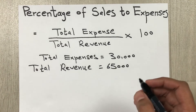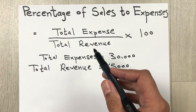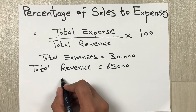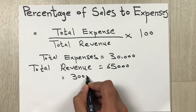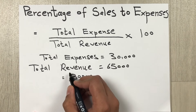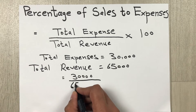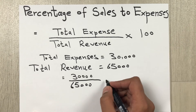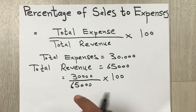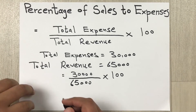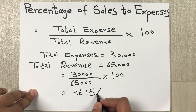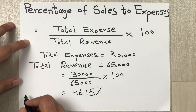So now we will put these values into the formula. Total expenses are 30,000, divided by total revenue which is 65,000, multiplied by 100. When we do this calculation our answer will be 46.15 percent.